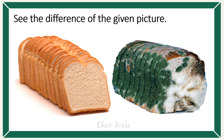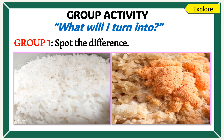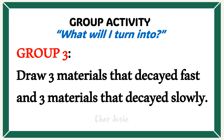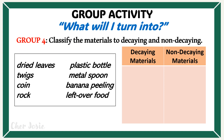What are the factors that contribute to the decaying process of the material? Now, let's have an activity. The title of this activity is: What Will I Turn Into? For the first group, your task is to spot the difference between the two pictures. For group 2, you're going to list down the factors that contribute to the decaying process of materials. For group 3, you're going to draw three materials that decayed fast and three materials that decayed slowly. For group 4, you're going to classify the materials into decaying and non-decaying.